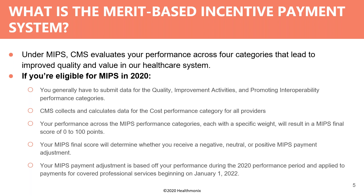What's very different about cost is there's nothing you need to report — CMS collects that data and calculates it on your behalf for all of your providers. You take your performance across all categories, and it results in your final MIPS score from 0 to 100, which determines whether you receive a negative, neutral, or positive payment adjustment — this year it's plus or minus nine percent. Importantly, you do the work in 2020, and beginning January 1, 2022, all your Medicare reimbursements will reflect your MIPS adjustment.